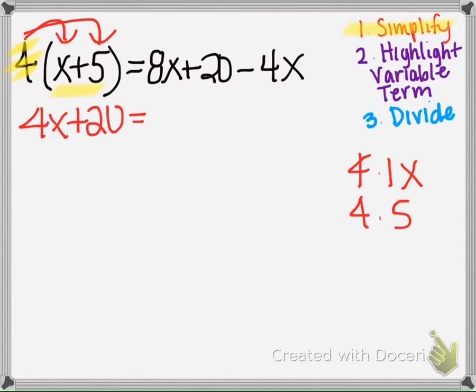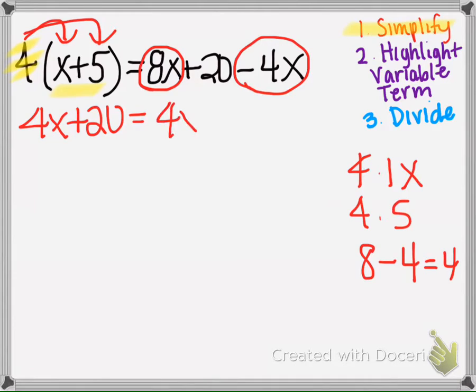Okay, now on the right side we have like terms, so we could put the 8x and the negative 4x together, so 8 minus 4 is 4, so we have 4x, and then we bring down the plus 20 there.